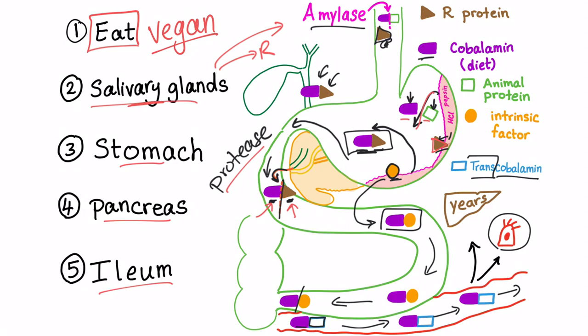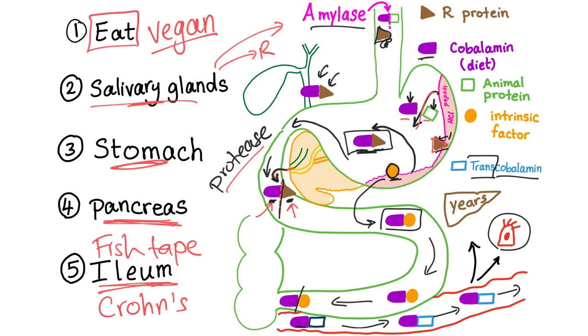Salivary glands, maybe salivary gland disease, but that's rare. Stomach. How about achlorhydria or pernicious anemia? It will lead to vitamin B12 deficiency. Pancreatic insufficiency will lead to vitamin B12 deficiency. Terminal ileum resection or damage of the terminal ileum by Crohn's disease or via the fish tapeworm. Also known as diphyllobothrium latum.